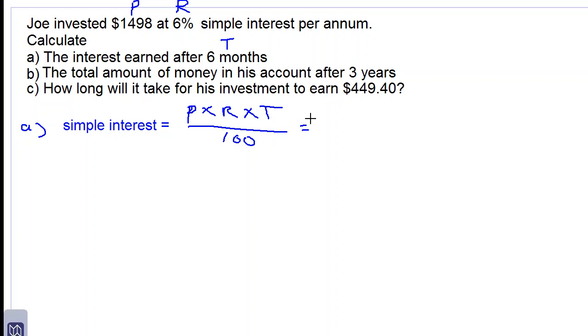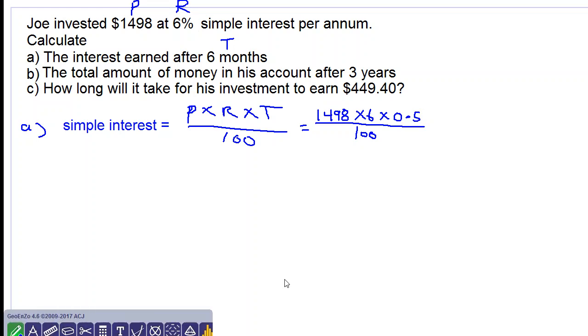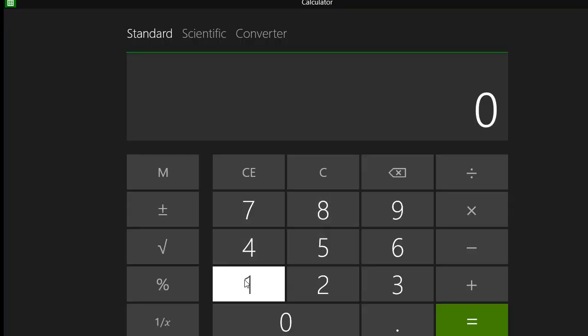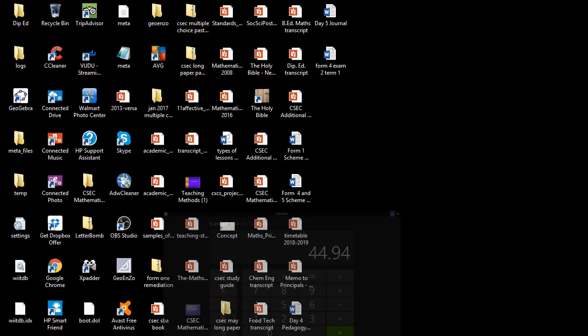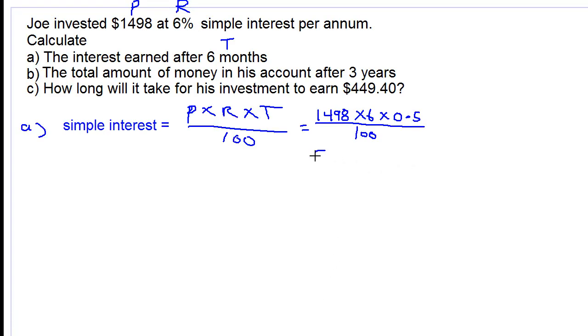Let's substitute the values for P, R, and T. So we have 1498 times 6 times 0.5 because time is 0.5 years or half a year, divided by 100. We work this out in our calculator: 1498 times 6 times 0.5 equals, divided by 100, forty four dollars and ninety four cents. So we get $44.94, this is our answer for part A.